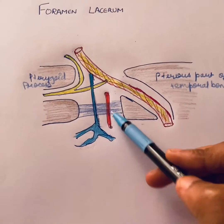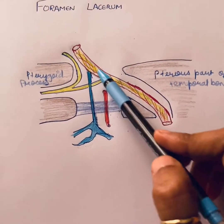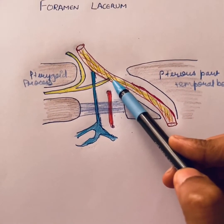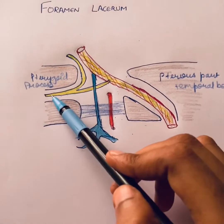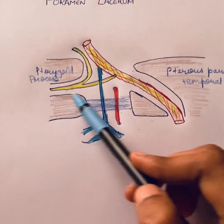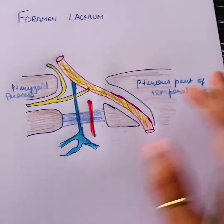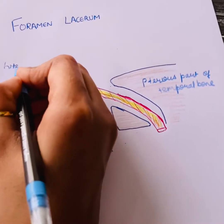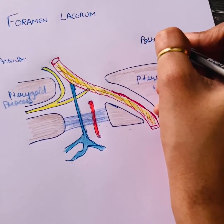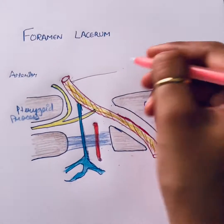In the upper part we have the internal carotid artery and the sympathetic plexus. We have the greater petrosal nerve and the deep petrosal nerve from the sympathetic plexus, which join to form the nerve of the pterygoid canal. This leaves the foramen by entering into the pterygoid canal in the anterior wall of the foramen lacerum.